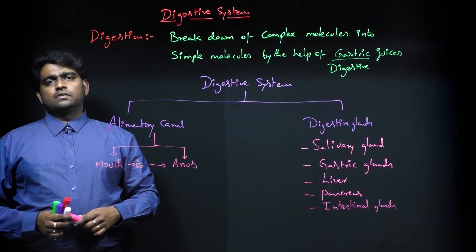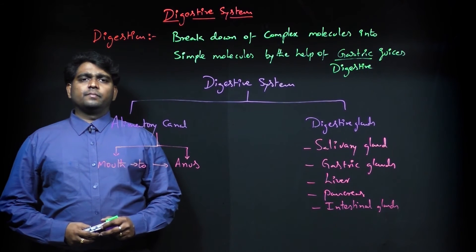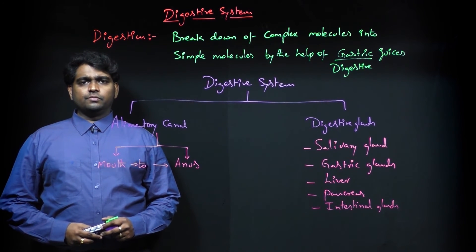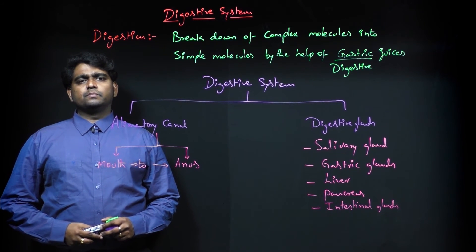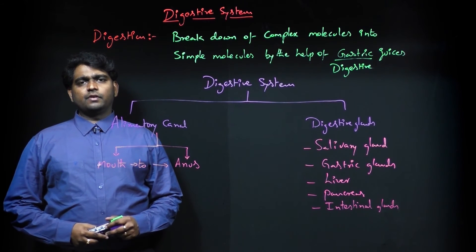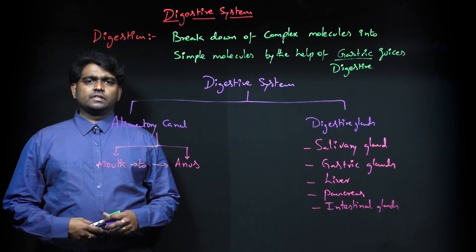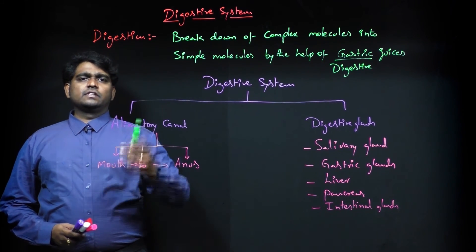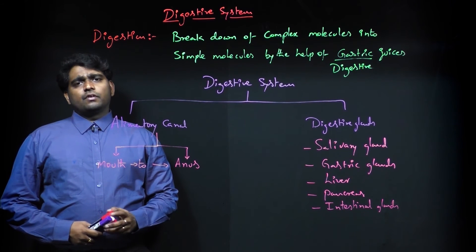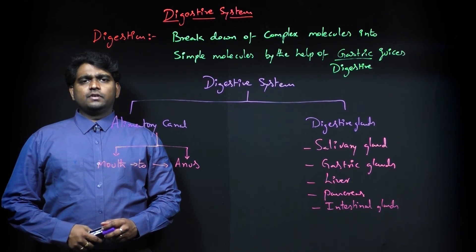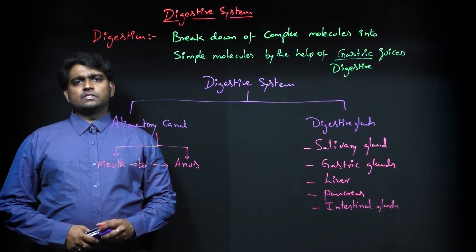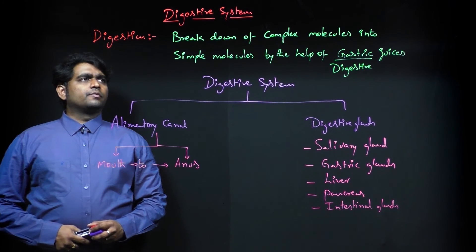The digestive system digests whatever food we take in. That food is composed of a majority of complex molecules, which are broken down to provide energy. The exact definition of digestion is the breakdown of complex materials into simple molecules by the help of digestive juices.